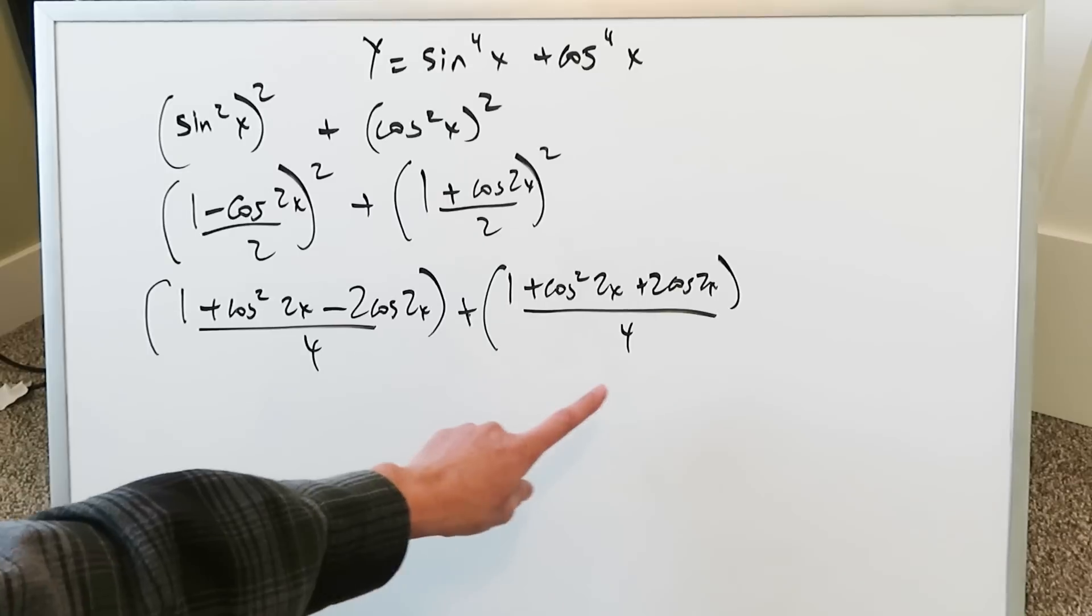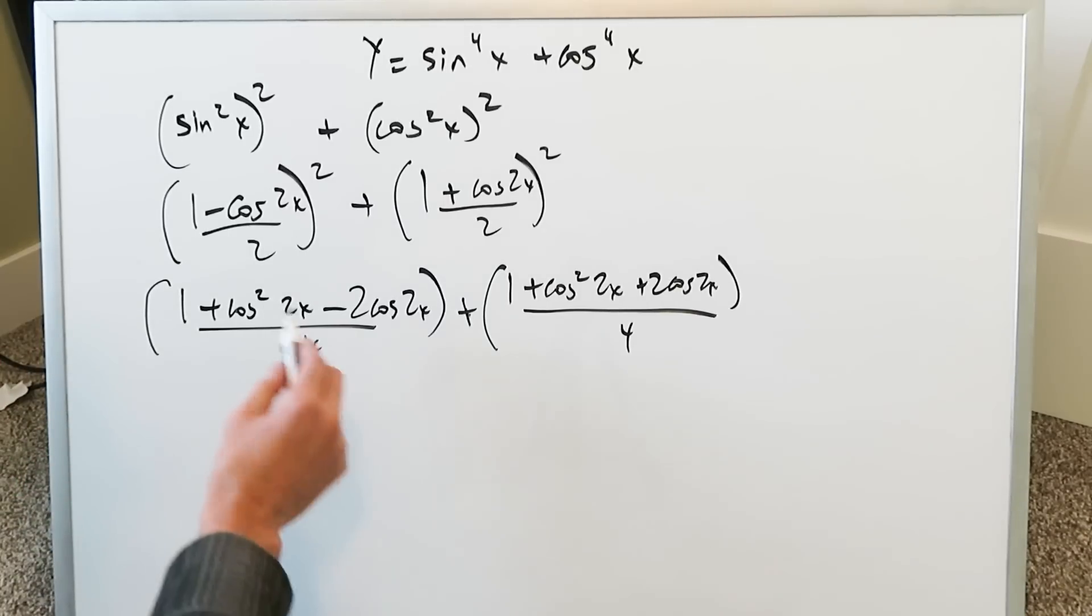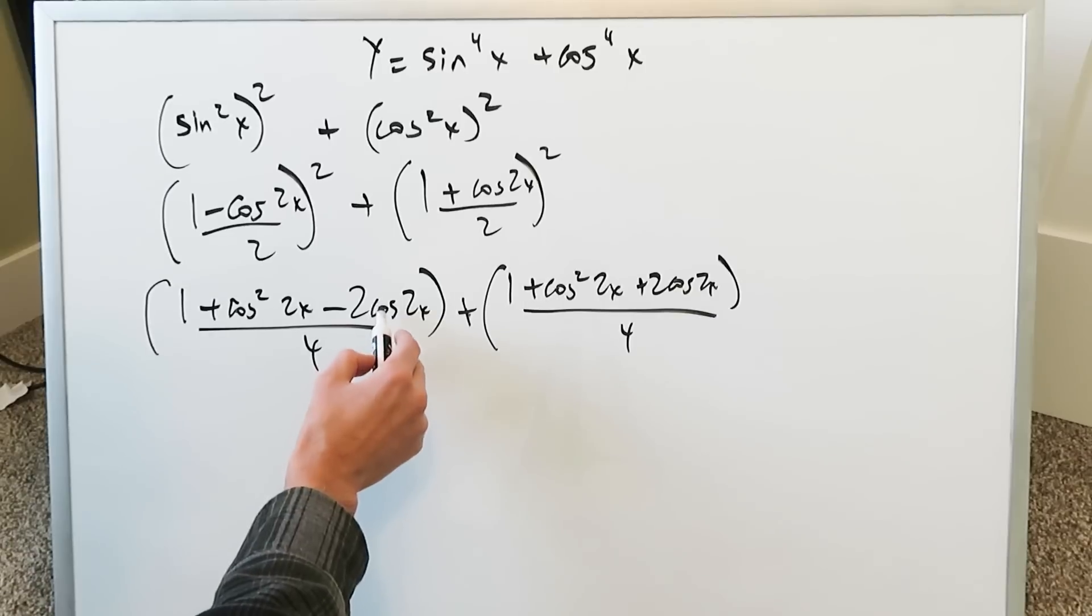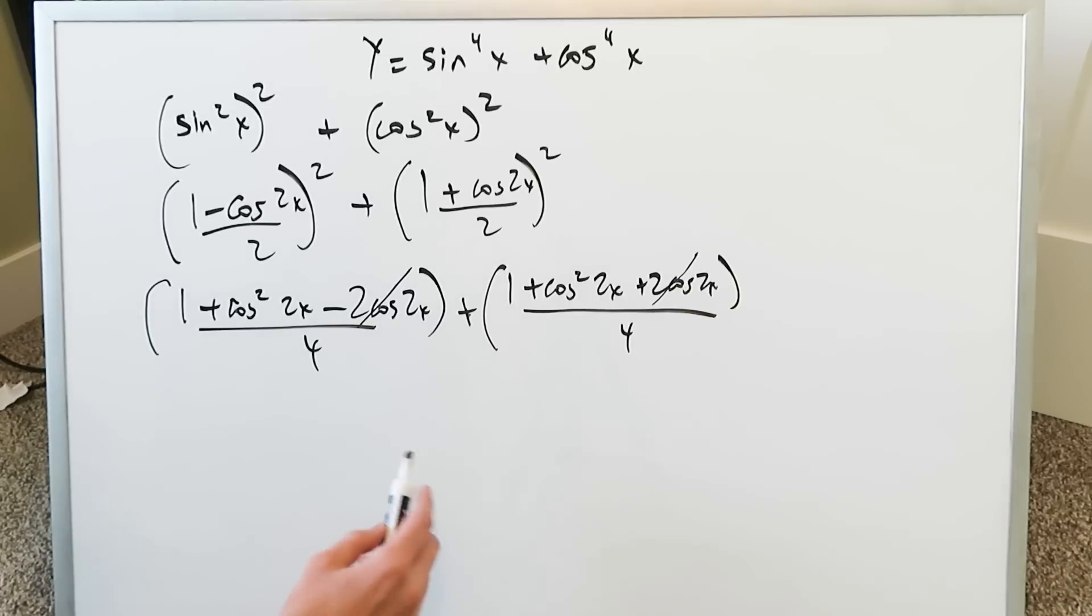Now you know everything here is under a common denominator of 4 so you can combine everything. When you're looking you have a minus 2 cosine 2x and a 2 cosine 2x they would cancel out and then you have a 1 and a 1 you can combine that.